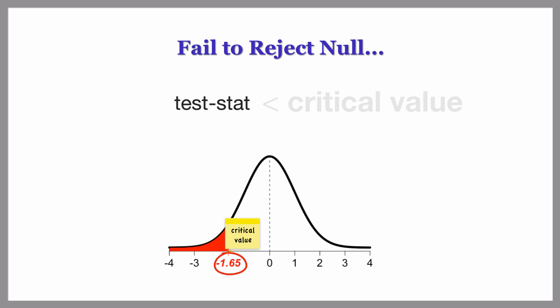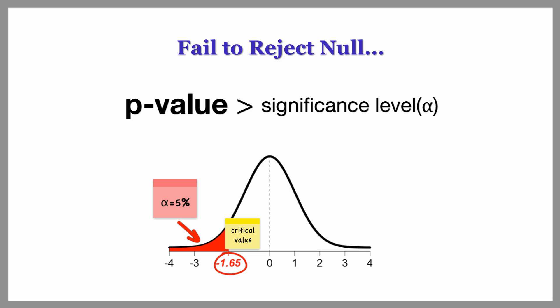If, on the other hand, the test statistic is less than the critical value in absolute value or the p-value is greater than the significance level, we will fail to reject the null.